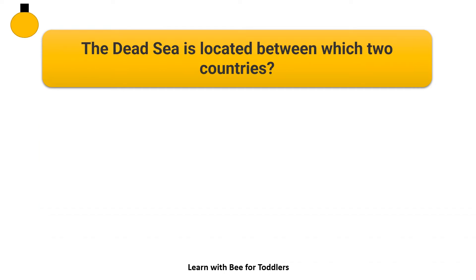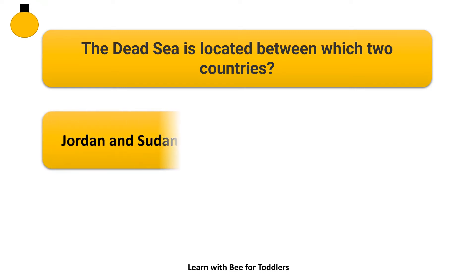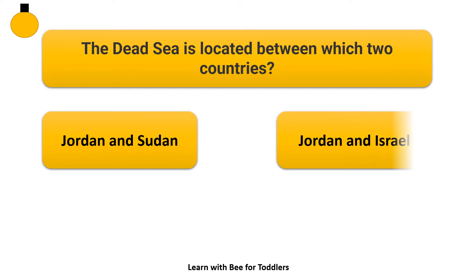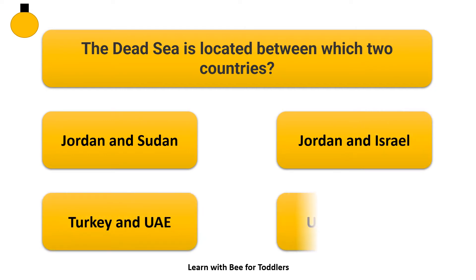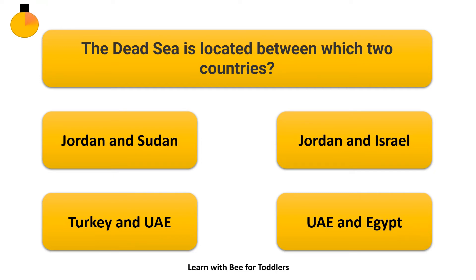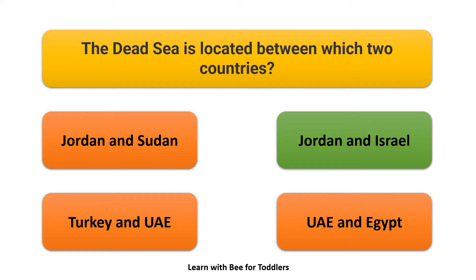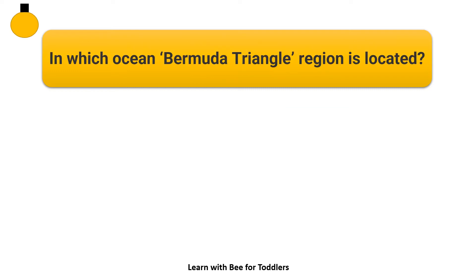The Dead Sea is located between which two countries? Jordan and Sudan. Jordan and Israel. Turkey and UAE. UAE and Egypt. The answer is Jordan and Israel.